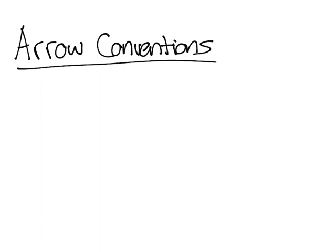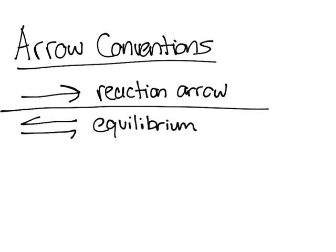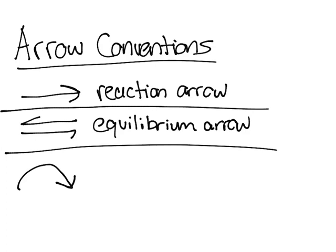There are different types of arrows. This one will be marked as a reaction arrow. This one right here is an equilibrium arrow. This right here, a curved one with a double, it's called a double headed arrow, indicates two electrons moving.